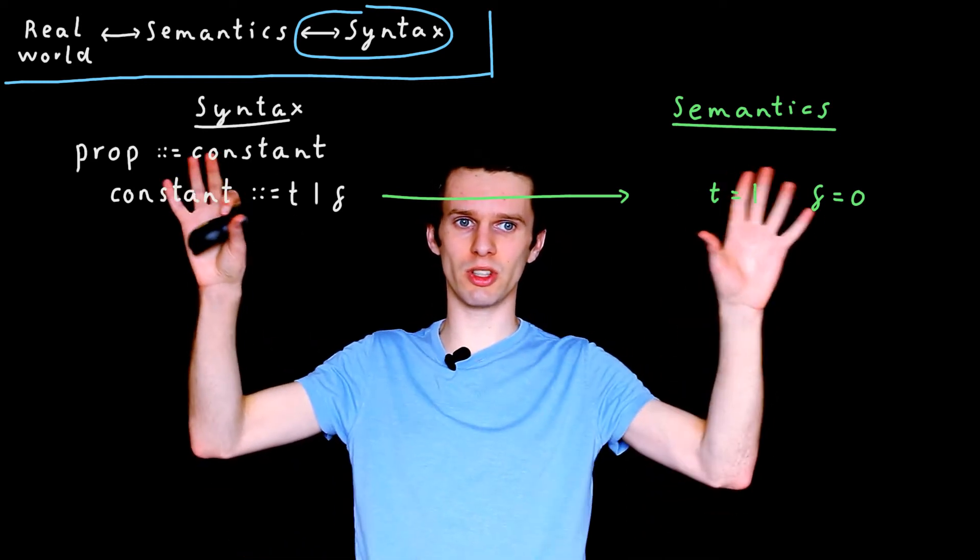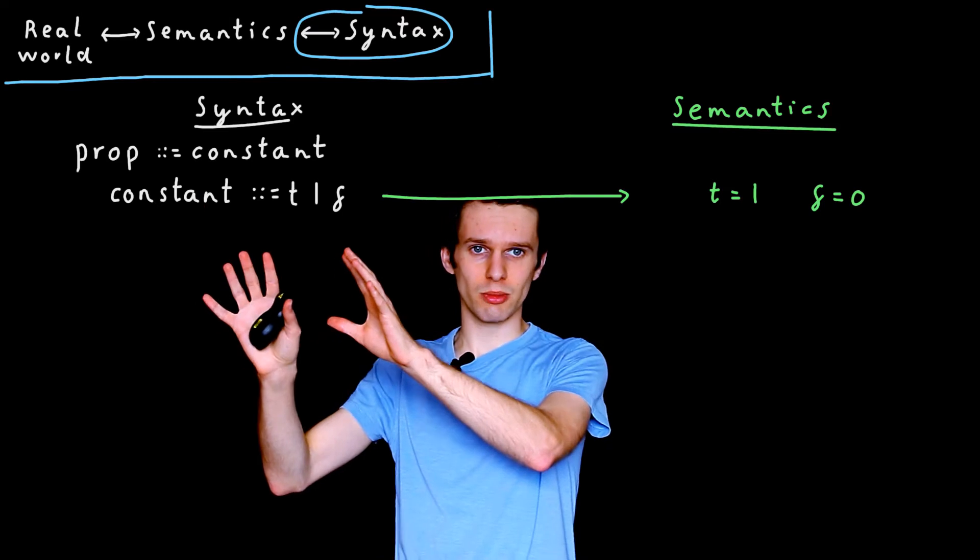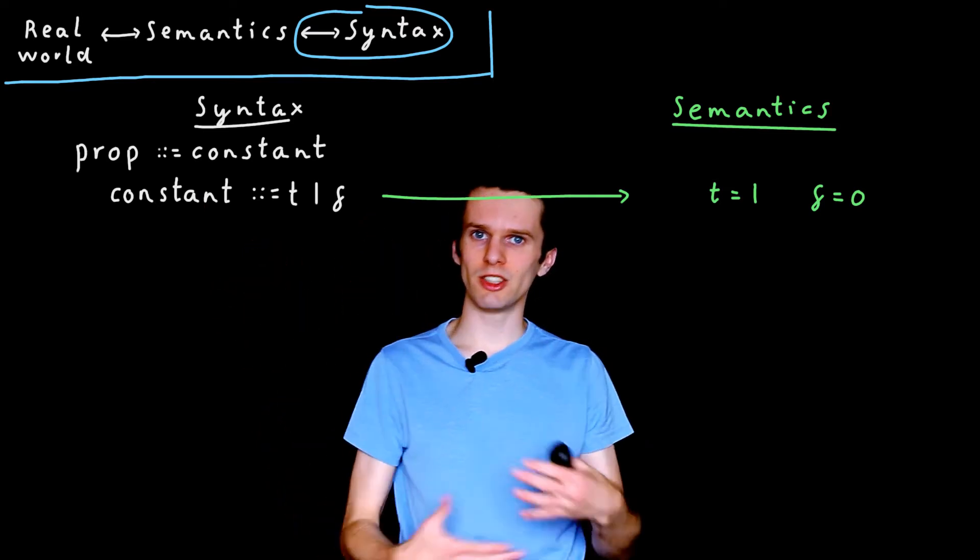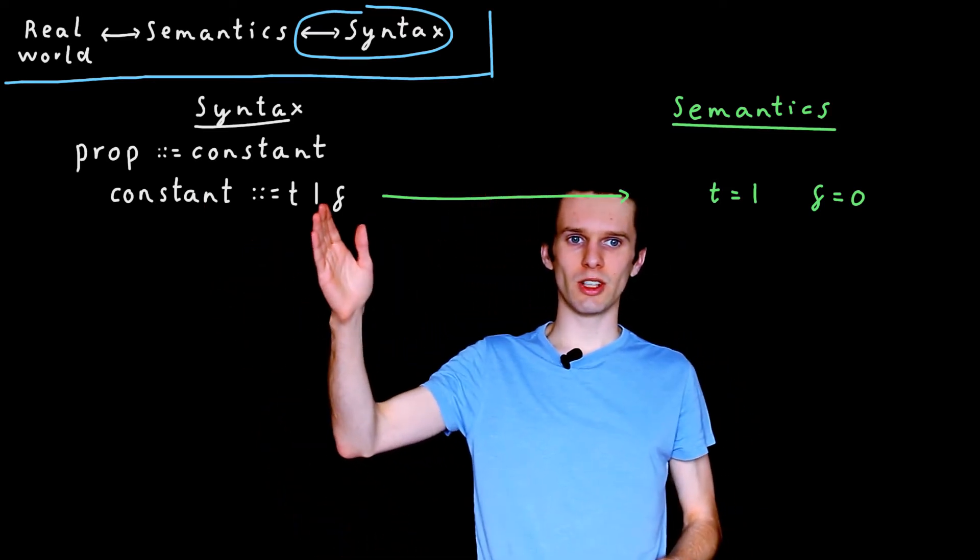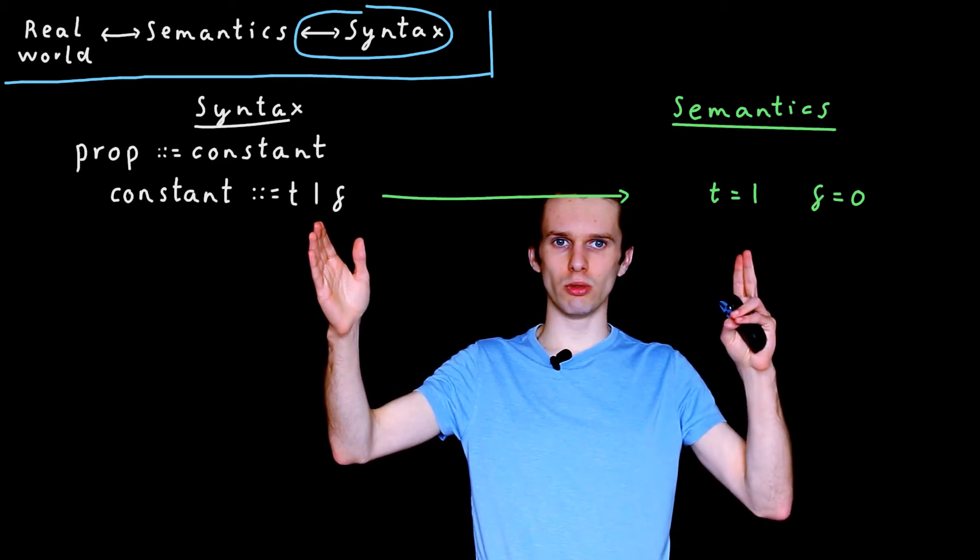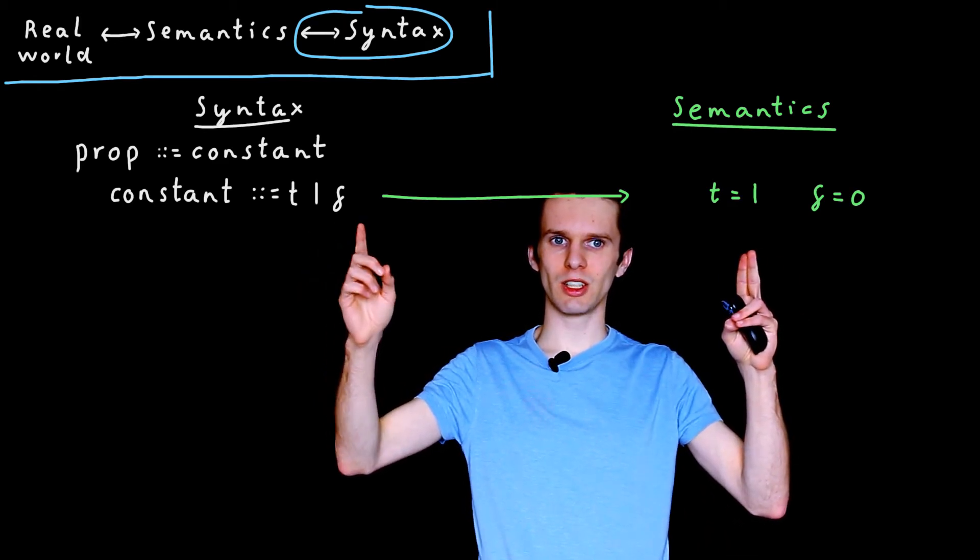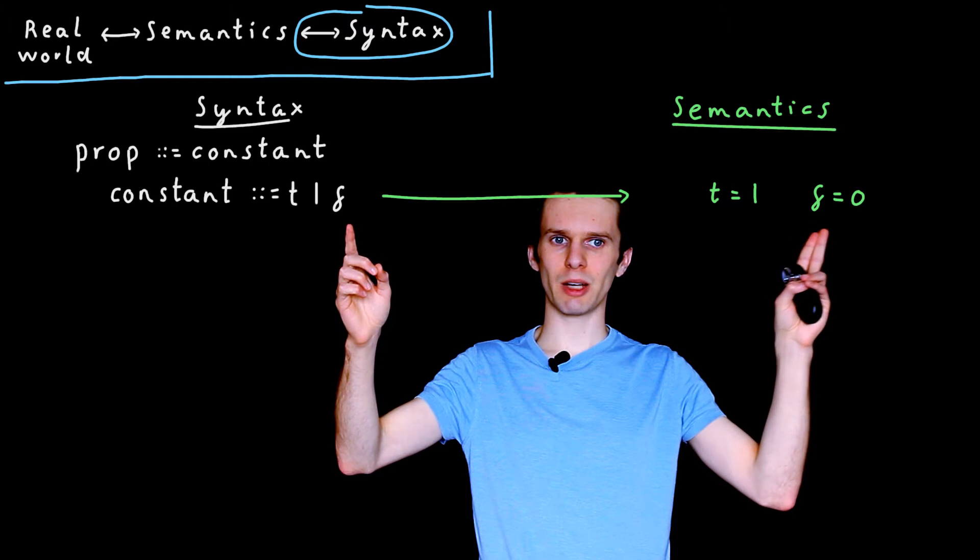And it's important to link this to the syntax. So what we're going to define over here is the syntax. And what we're defining over here is the semantics. And we're going to link the syntax with the semantics. And in this case, the case of constants, it's relatively easy. So the letter T maps to one in the semantics, and the letter F maps to zero.